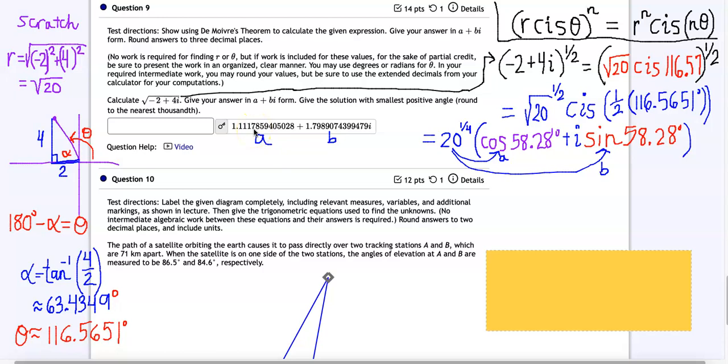So I'm going to type that in my calculator right now just to make sure. Yes I'm getting the same answer. And so then do also the same for b. And then when you go to type in your answer you want to make sure that you are rounding to the thousandths place. So 1.112 plus 1.799i. Okay so that is De Moivre's theorem and there's a video here if you need extra help.